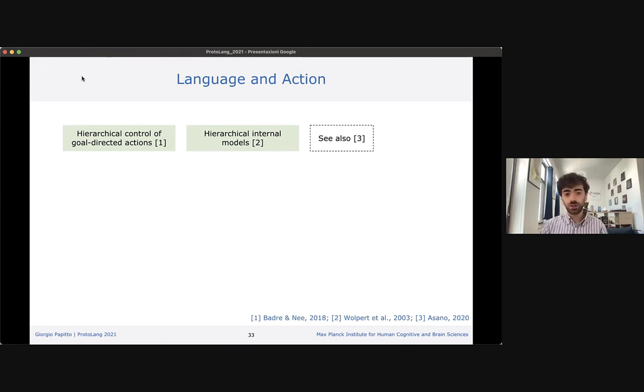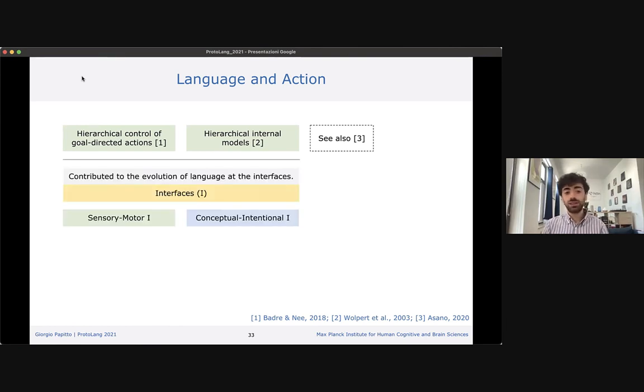If we are actually able to observe this BA44 responsiveness to this informativity hierarchy, we could say language and action might indeed share some hierarchical models that could have developed in tandem. Here I plot the hierarchical control of goal-directed action, the hierarchical internal models. However, these models become evident in language only once we move to the interfaces and not when we look at the computational system. As a matter of fact, the computational system might have developed in parallel to hierarchical models in language and action.